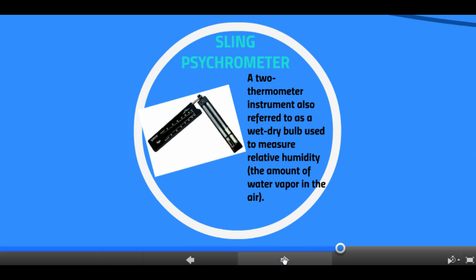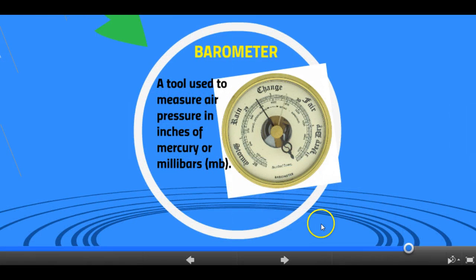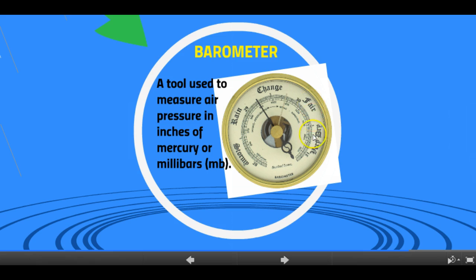The last instrument we're going to look at today is a barometer. You may have seen one before. Barometers are a tool used to measure air pressure in inches of mercury or in millibars. Barometers measure how much air pressure is in the air at any given time, using a setting hand and a measuring hand. The reading will either rise or fall — if it rises it moves toward better weather, and if it's falling it's heading toward bad weather.